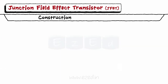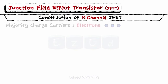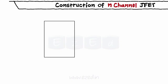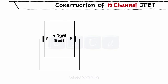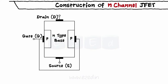Let's start with the construction of N channel JFET. The name N channel signifies that here electrons are the majority charge carriers. To form the N channel JFET, we take N type semiconductor as the base and dope it with a P type semiconductor at both the ends. Both these P regions are electrically connected to each other, and an ohmic contact is taken out which is called as the gate. Two more terminals are taken out from the N substrate and are called as source and the drain.